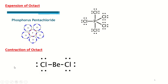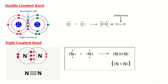If we talk about contraction of octet, BeCl₂ is a classical example. There are only 4 electrons in the octet of BeCl₂ when it combines with 2 chlorine atoms. This is actually the contraction of octet — less than 8 electrons in the valence shell of the central atom.